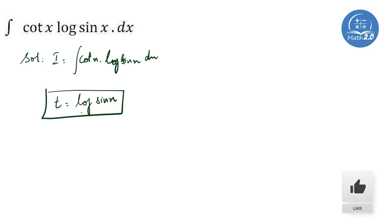Now, we will differentiate with respect to x. Differentiating log of sin x with respect to x, it is 1 by sin x, so dt by dx starts with 1 by sin x.